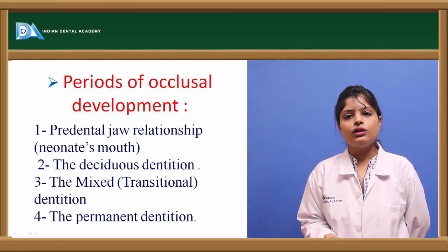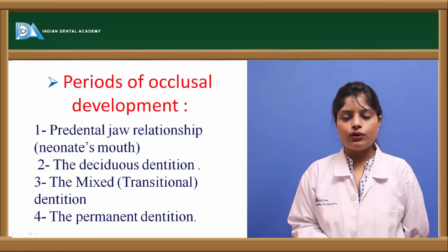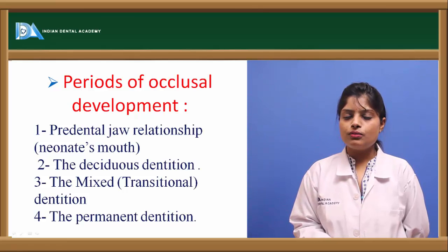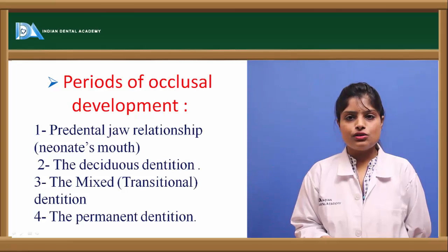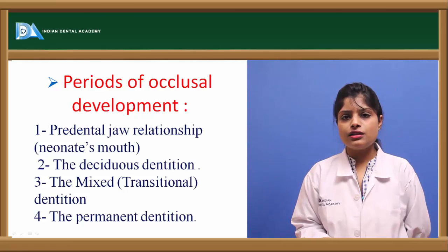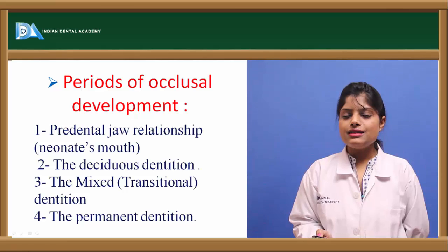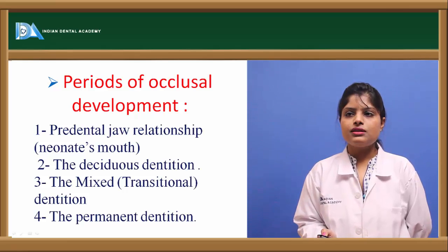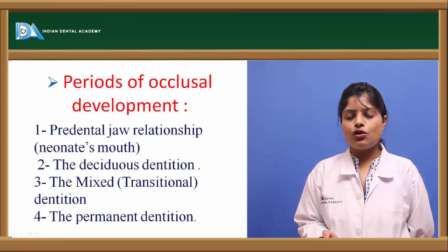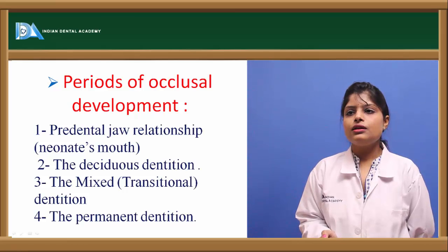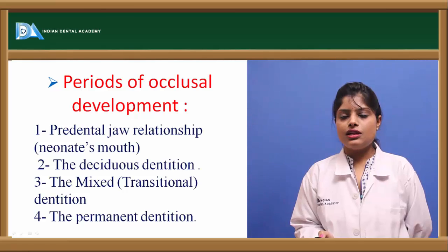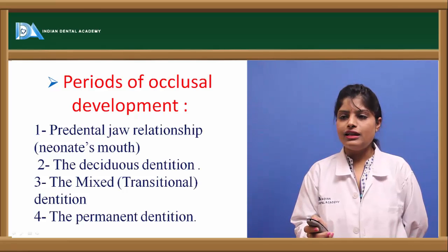Human dentition is a diphyodont dentition, comprising both permanent and primary sets of dentition, which are further divided into various developmental stages. These stages are of four types: the pre-dentate or jaw relationship, the primary or deciduous dentition stage, the mixed dentition stage, and the permanent dentition stage.